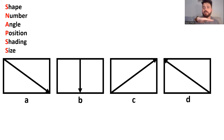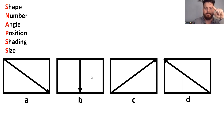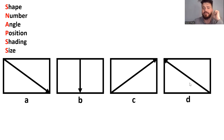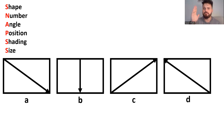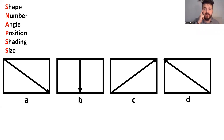Next is angle — the orientation, the way a shape is rotated. Looking at a, the arrow points to the bottom right corner of the rectangle. In b, the arrow points to the bottom. In c, the arrow is in the top right corner. In d, the arrow points to the top left corner. They're all in different positions, so let's be mindful of that and move on to the next factor.